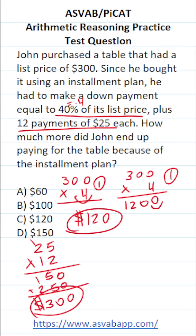In total, he had to spend $120 as the down payment plus $300 in payments. So in total, he spent $420 to buy the table using the installment plan.